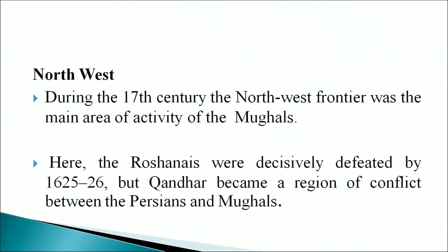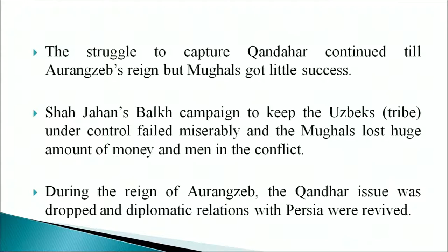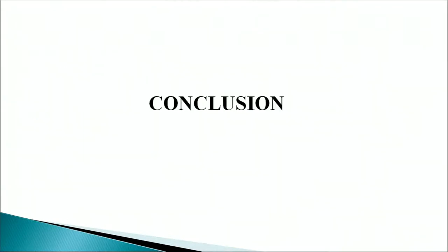Shivaji's successor was his son Shambhaji. Many Maratha chiefs did not support him; Shambhaji extended help to Raja Ram, the other son of Shivaji, but internal conflict weakened Maratha power. Regarding the northwest, during the 17th century, the Raushanis were decisively defeated by 1625-26. Kandahar became a region of conflict between the Persians and the Mughals. The struggle to capture Kandahar continued till Aurangzeb's reign but the Mughals achieved little success. Shah Jahan's bold campaign to keep the Uzbek tribes under control failed miserably. During the reign of Aurangzeb, the Kandahar issue was dropped and diplomatic relations with Persia were revived.